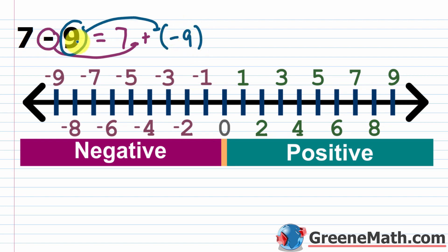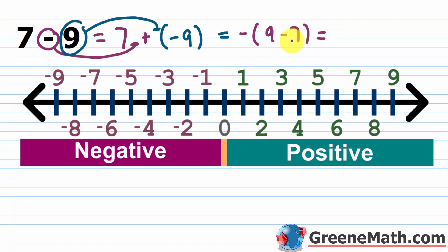So 7 minus 9 is the same thing as 7 plus negative 9. I have 7 and you take 9 away — it's the same as saying I have 7 and a debt of 9. Using the procedure for adding integers, use the sign of the number with the larger absolute value. The absolute value of negative 9 is 9, the absolute value of 7 is 7, so negative 9 has the larger absolute value and the result is negative. Then subtract: 9 minus 7 is 2, so the answer is negative 2.